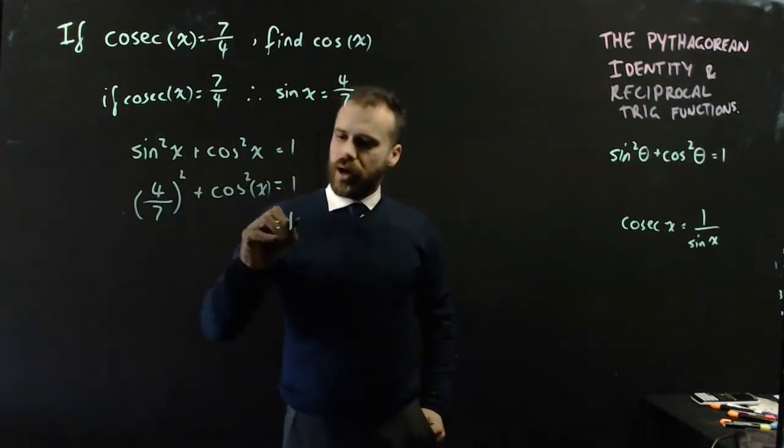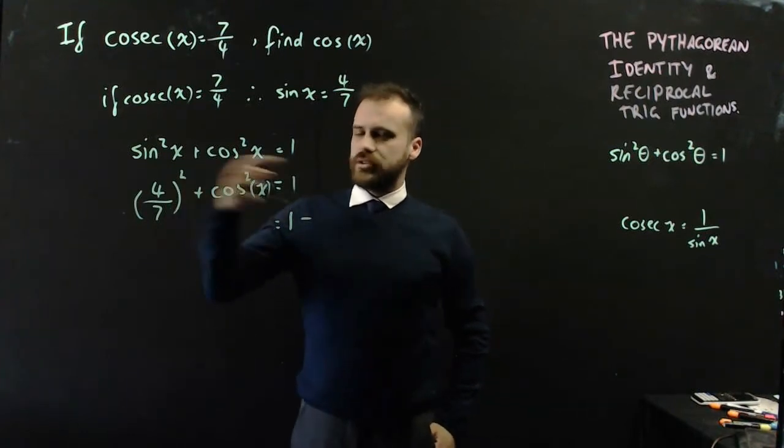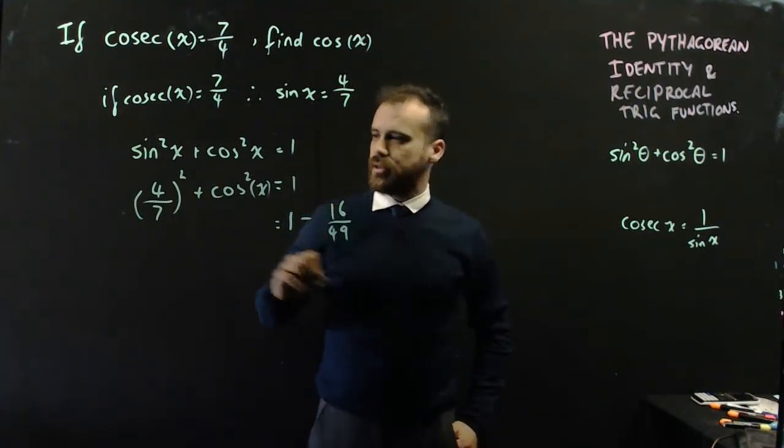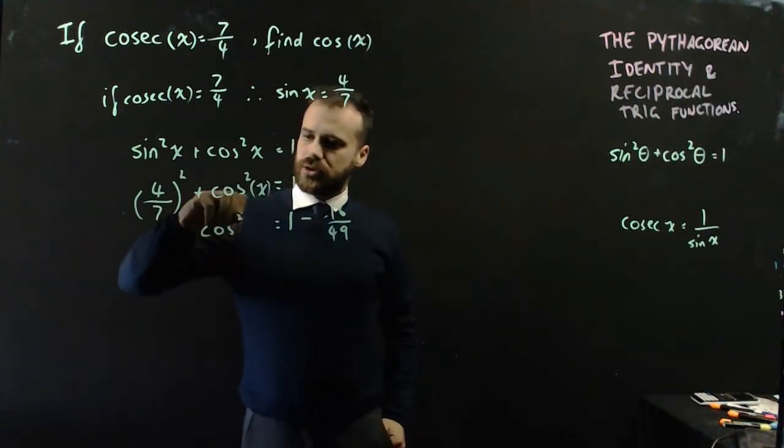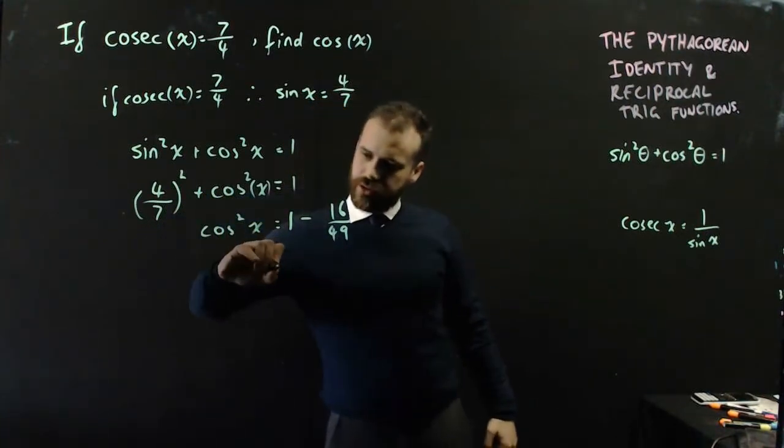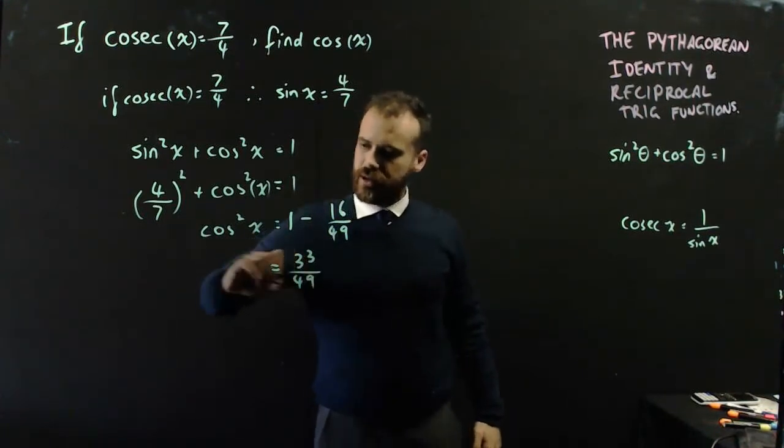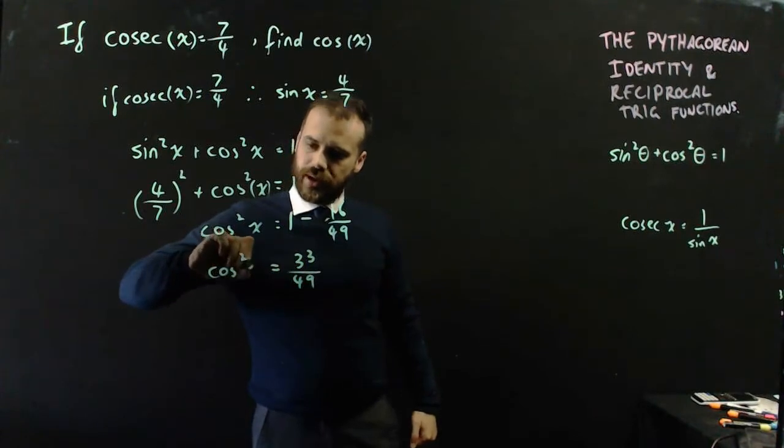Now, that means that 1 minus 4 on 7 squared, which is 16 on 49, equals cos squared x. Now, subtracting those two, we're going to get 33 over 49 equals cos squared x.